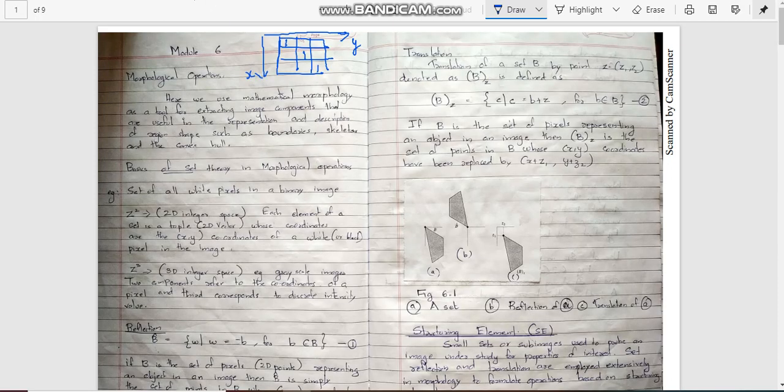In morphological operation, we are making use of the basics of set theory. First, we need to learn what is a two-dimensional integer space. It is represented as z square. Consider a 3 by 3 image like this, and we are considering the set of all white pixels.